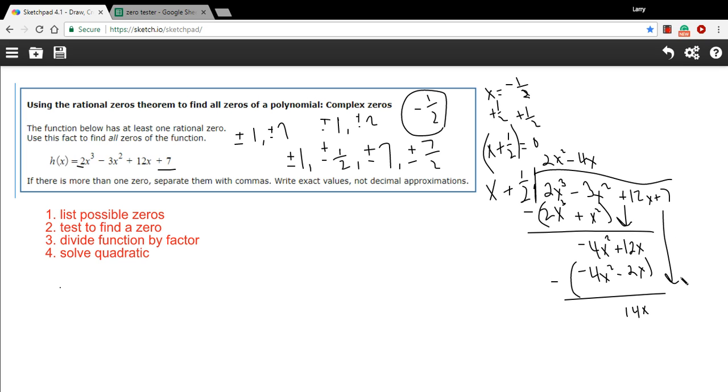And we bring down the 7. And we ask ourselves, what do we multiply x by to get 14x? That's 14. So 14 times x is 14x. And 14 times 1 half is 7. Perfect. So when we subtract again, we're going to get 0 there. All right. So our division worked. So x plus 1 half is definitely a factor. This is the resulting quadratic equation that we get. And we can use the quadratic formula to solve for the x's here, solve for the 0's.